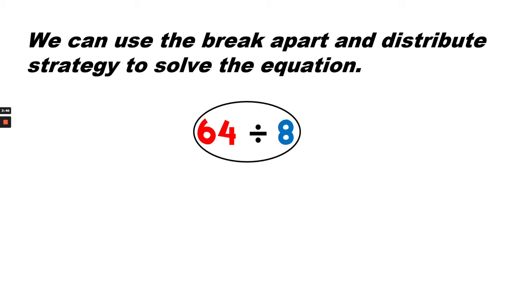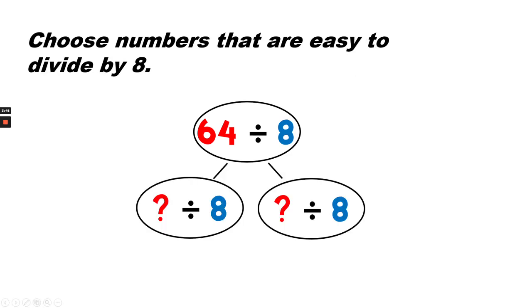Now we can use the break apart and distribute strategy to solve the equation sixty-four divided by eight. We're going to break this apart into two different expressions. We want to keep the eight but we want to have two different unknowns, and we want to do this so that we can make it easier to divide. What number could we put here that would be easier to divide, easier than sixty-four? Let's try forty and twenty-four. We know that forty plus twenty-four equals sixty-four, so we can say that forty divided by eight plus twenty-four divided by eight equals sixty-four divided by eight.